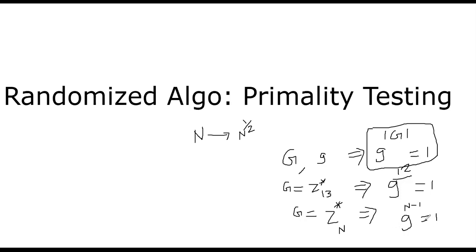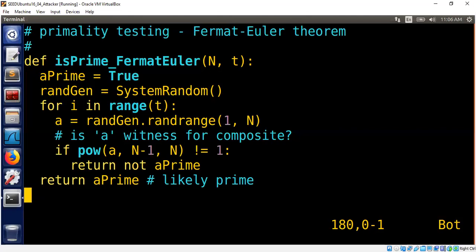So we can use this fact to decide whether n is prime or not. I'm going to show you an algorithm now that will leverage this theorem, the reverse of this theorem. Be careful, you cannot tell that if g power n minus 1 is 1, n has to be prime.